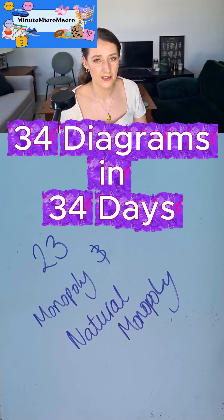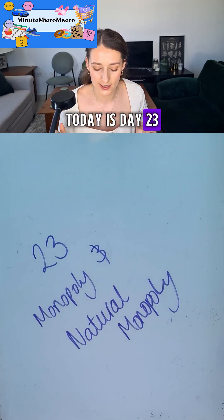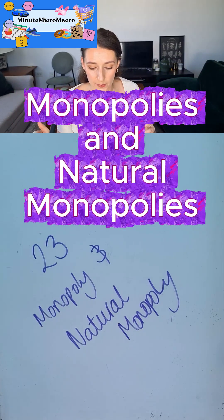Hello and welcome to 34 Diagrams Drawn in 34 Days. This is to help you with your microeconomic exam. Today is day 23 and we're looking at monopolies and natural monopolies.